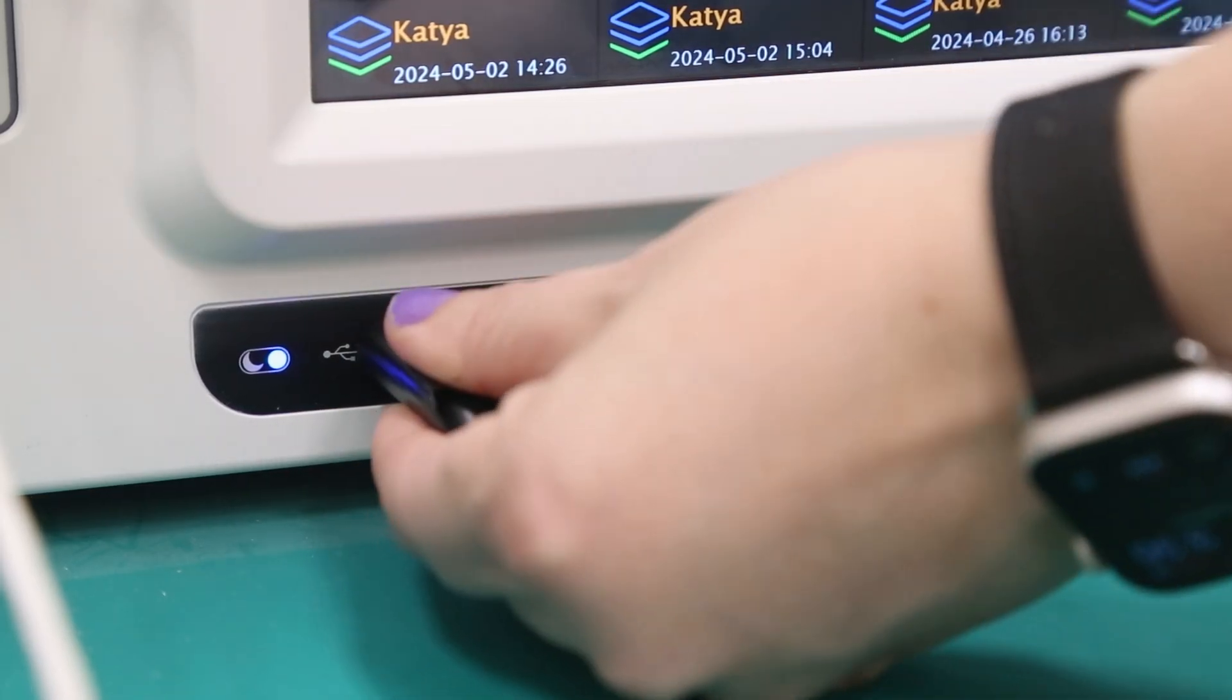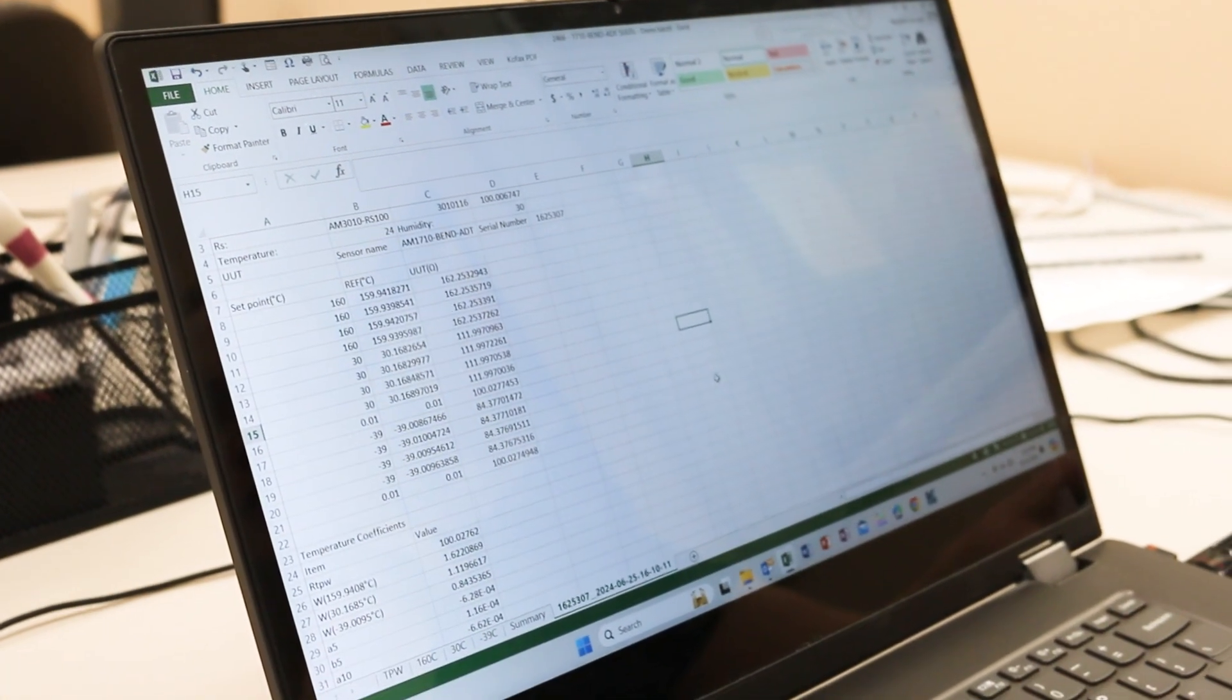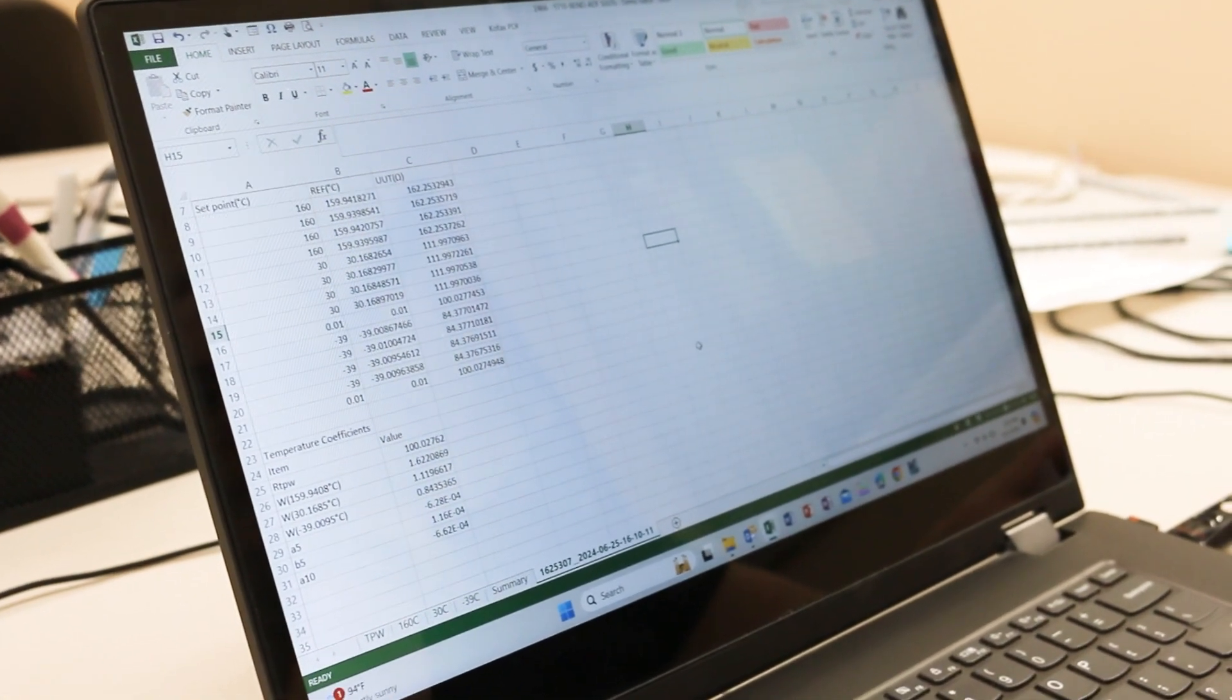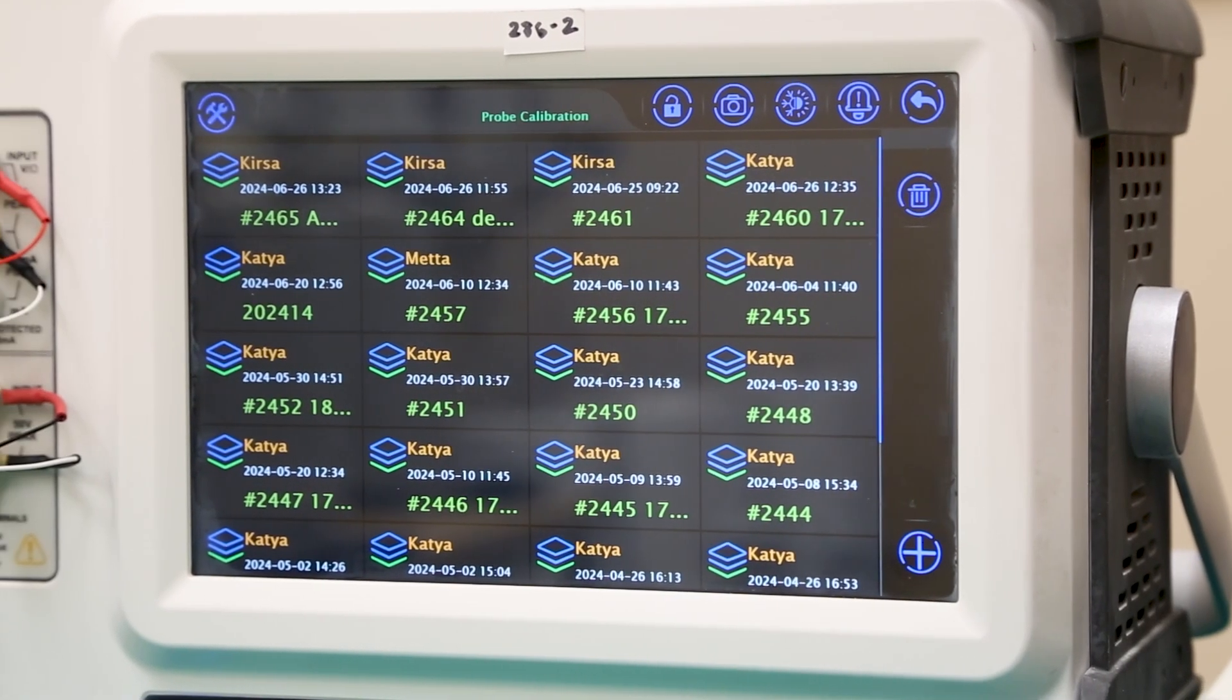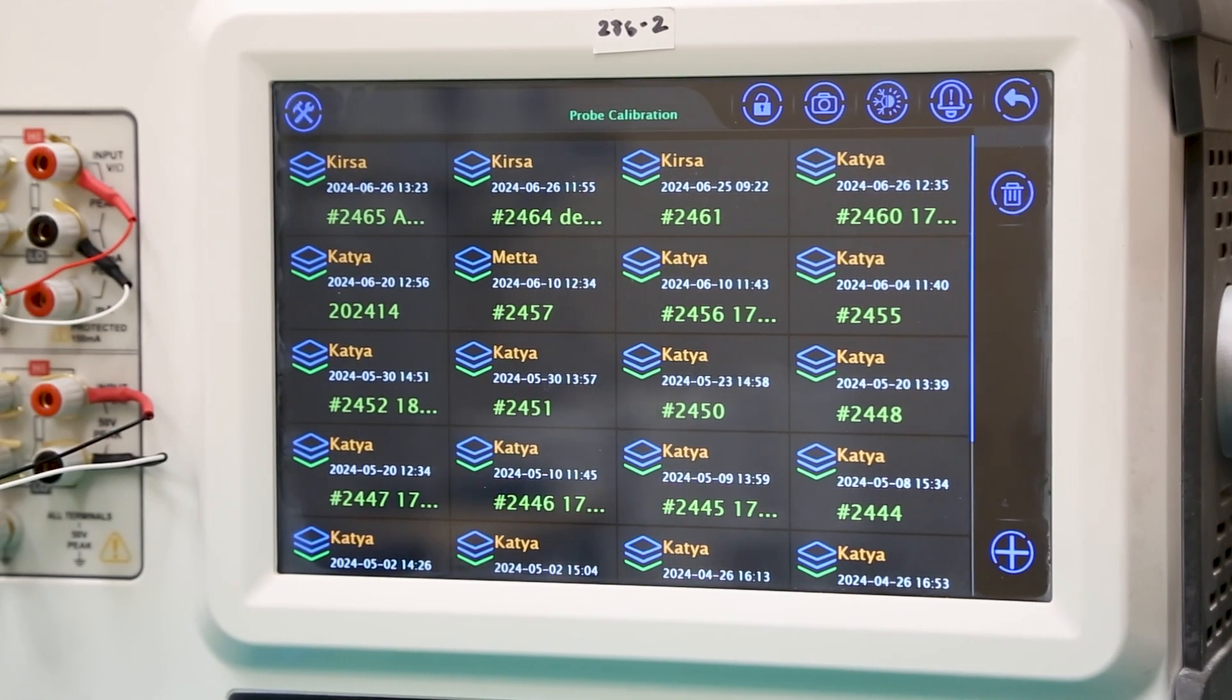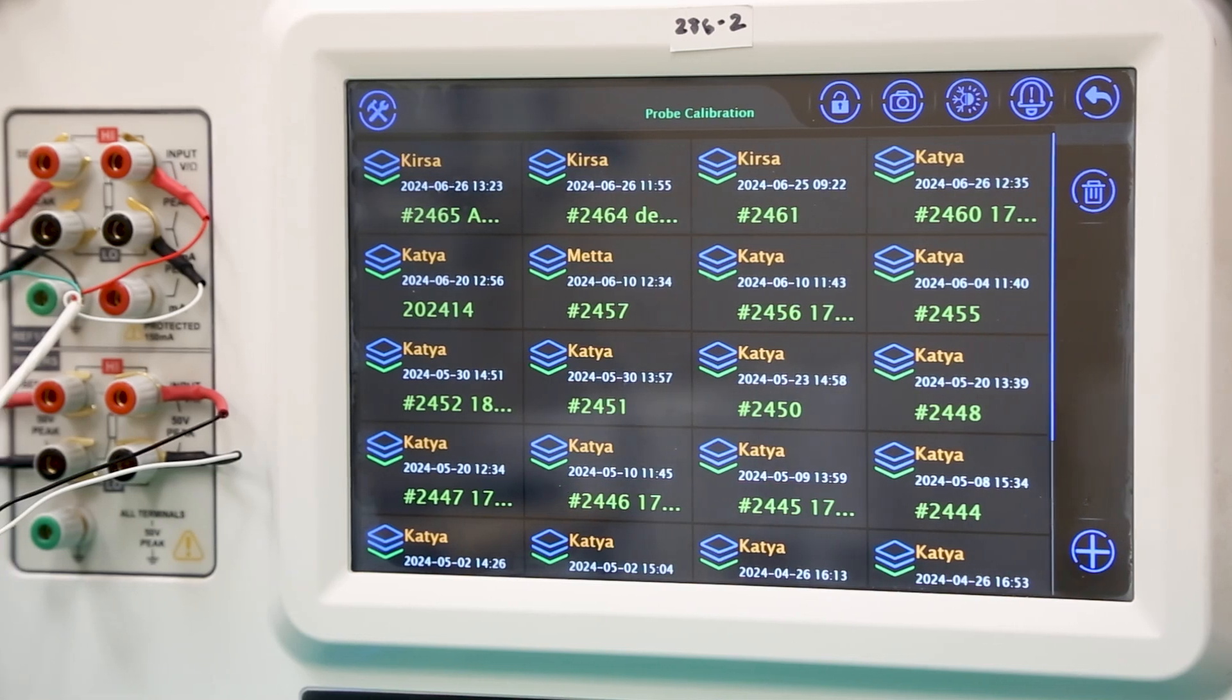Once exported, the data and coefficient calculations will be stored on a CSV file to be easily accessed and organized using any spreadsheet program. The calibration program will also be stored on the Aditel 286 to be repeated at any time, both improving lab efficiency and reducing downtime.